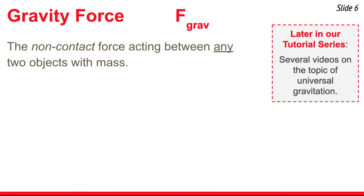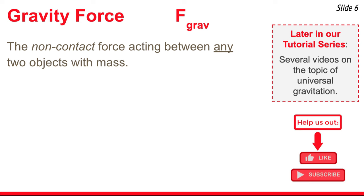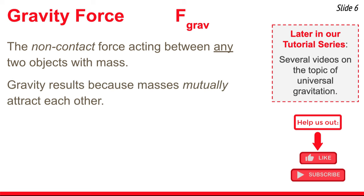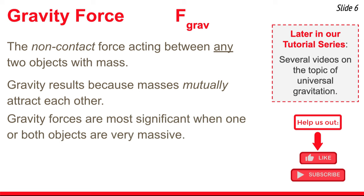The first force we'll talk about is the gravity force, represented by the symbol F-grav. This is a non-contact force that acts between any two objects with mass, and it always results because masses mutually attract one another — an idea called universal gravitation, which will be the topic of future videos. Gravity forces are most significant when one or both of the objects are very massive, like the earth.